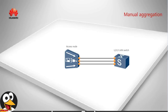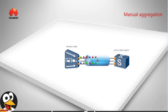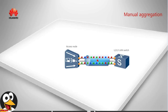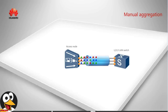After such configurations, the two interconnected devices will transmit packets through the links. If a link fails when the devices are running, the access device performs calculation again according to the current available links in the aggregation group and transmits packets through the available links to ensure that user services are not affected. After the faulted link recovers, the access device restores the link, performs calculation again according to all available links in the group, and transmits packets through the links again.